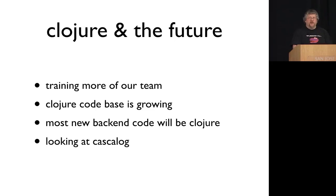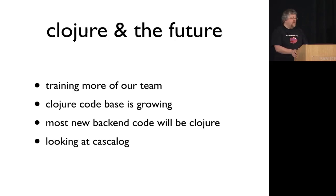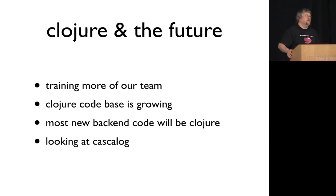We're training more of our team — we've actually got two of our team here, and one of them took the Cascalog course. Our Clojure code base is growing, though it seems to grow a lot more slowly than some of our other code. We're looking at Cascalog because we think it will help us do the ad hoc analysis we need on the amount of data we've got, and gradually we will be in that big data space that Clojure is so good at.